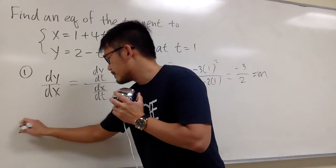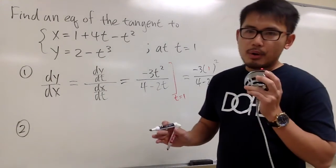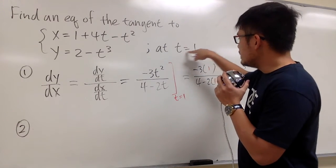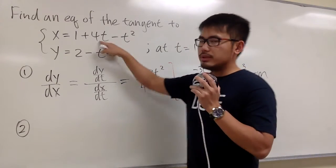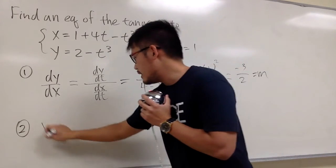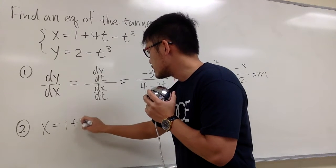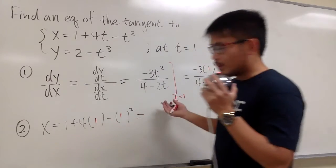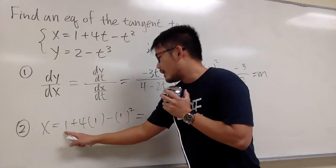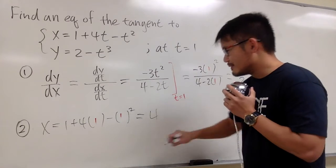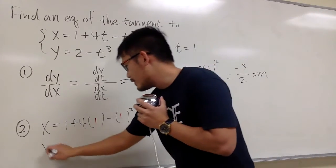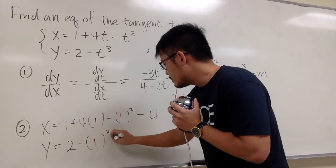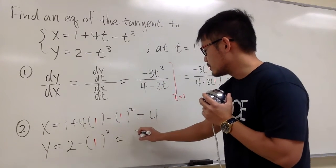Secondly, we need a point. To get a point, we need to have x, y. We need to know t equals 1, plugging this into the t values, then we get the x value. So we can see x equals 1 plus 4 times 1 minus 1 squared, and then just work this out. 1 plus 4 minus 1, we get 4. And then we do the same for y. y equals 2 minus 1 to the third power, and this is just 2 minus 1, so we have 1.